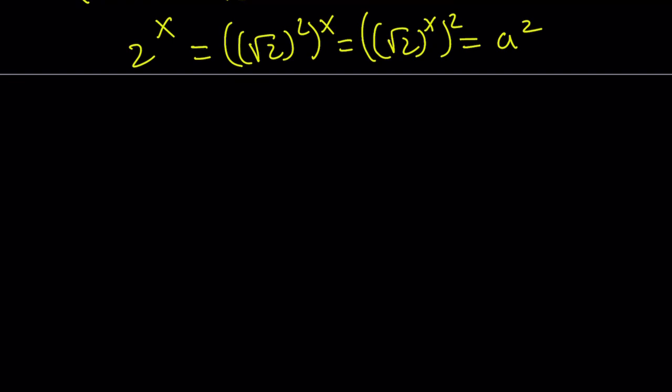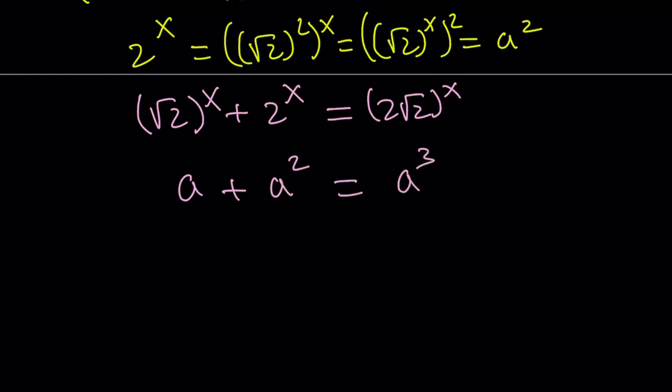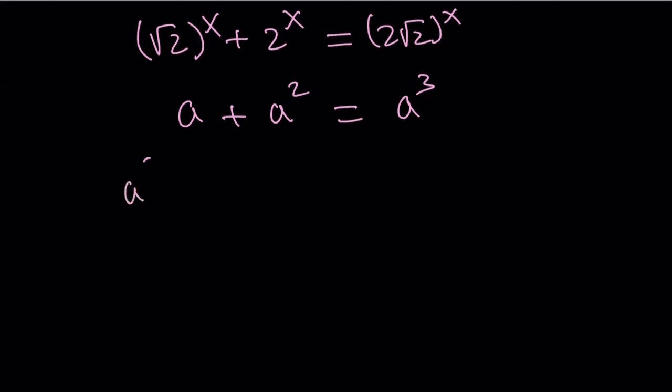So we get the following from the original equation. Let me write it one more time. Square root of 2 to the x plus 2 to the x equals 2 times the square root of 2 to the power x. Now we're going to replace square root of 2 to the power x with a. This is going to be a squared and this is going to be a cubed. So let's go ahead and put everything on the same side. a cubed minus a squared minus a equals 0.